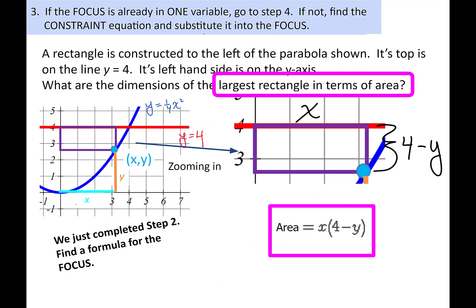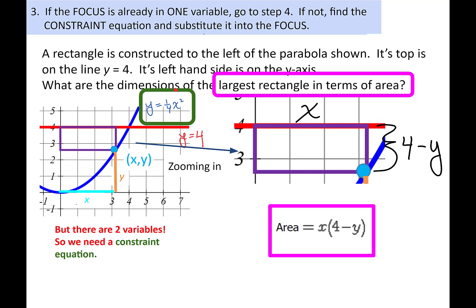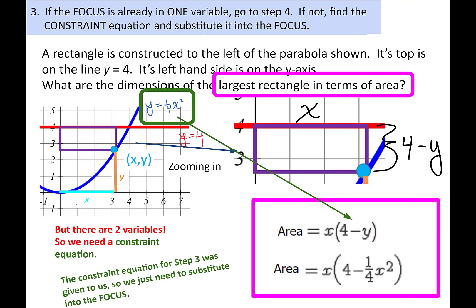Step 3: we want the focus to be in terms of one variable. Sadly, we have both x and y — two variables. We need a constraint equation. They actually gave it to us in the picture: the relationship between y and x is just y equals one-fourth x squared. We substitute that into the focus, and we end up with an area formula with one variable, x. Now we can actually graph it.